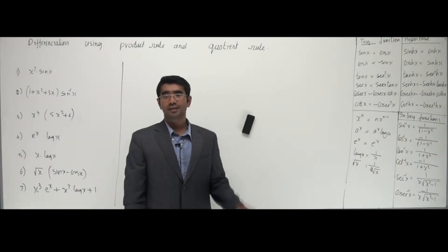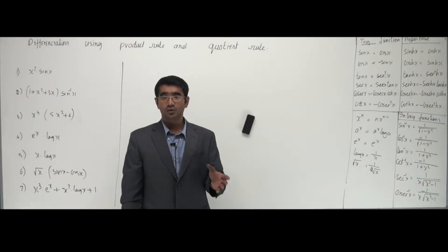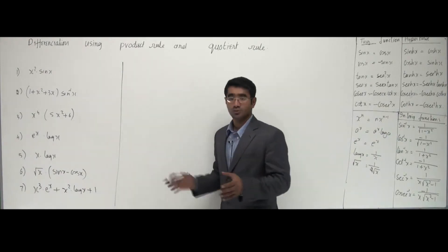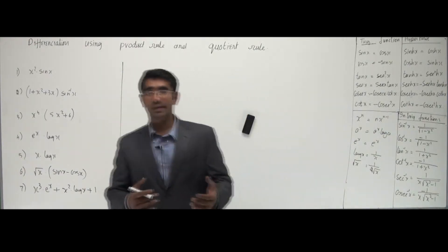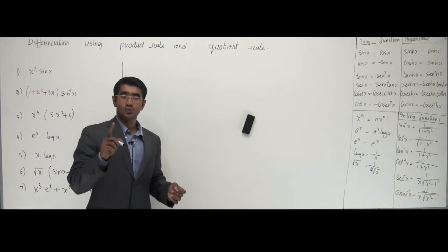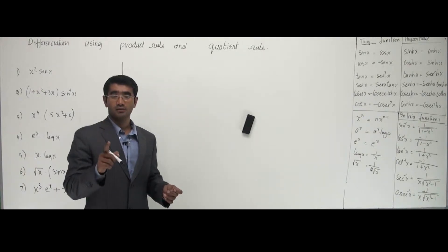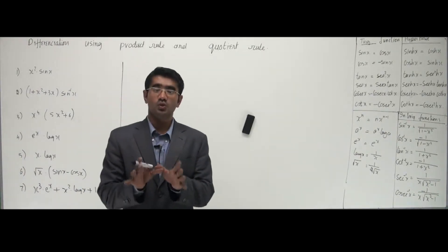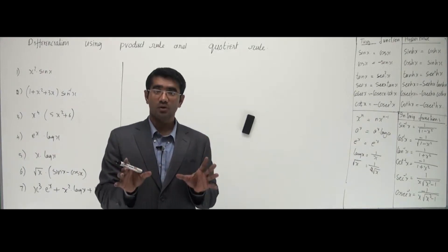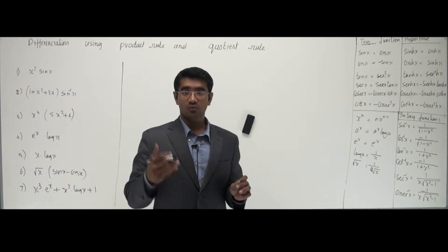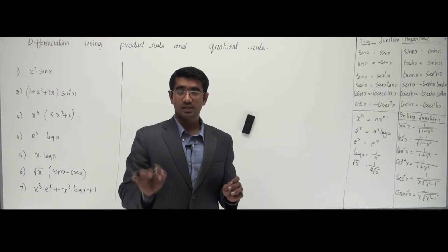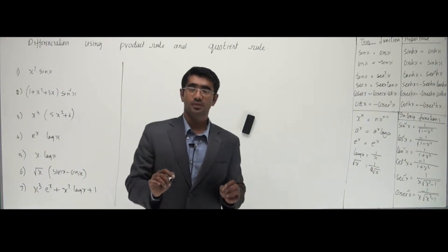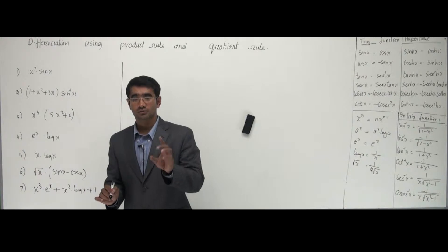Now that we understand what exactly product rule and quotient rule are, let's work on a couple of problems based on product rule, and we'll go ahead with quotient rule a little later. You need to work out problems yourself. If you can work these problems yourself, it means you've got the concept. If you're not getting it, pause the video, take a paper and a pen, and try working it out yourself — you can be the best teacher for yourself.